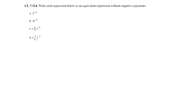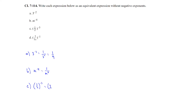Question 114: Write each expression without negative exponents. For 3 raised to the negative 2, take the reciprocal of the base: 1/3 raised to the positive 2, which equals 1/9. For 1.5 raised to the negative 3, the reciprocal of 1.5 is 2, raised to the positive 3, giving 8.